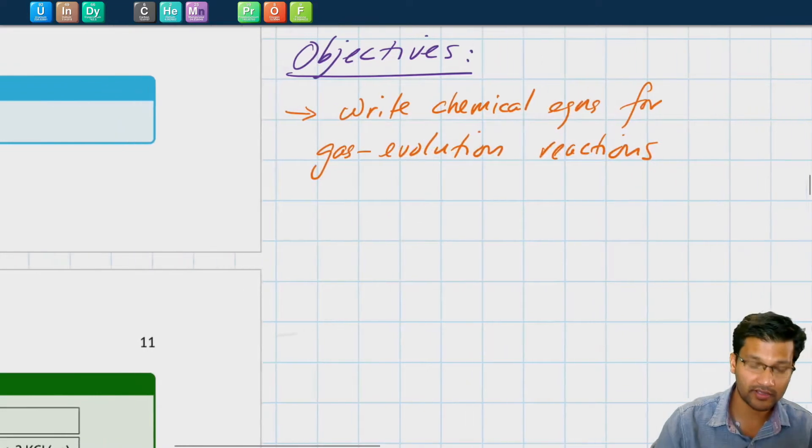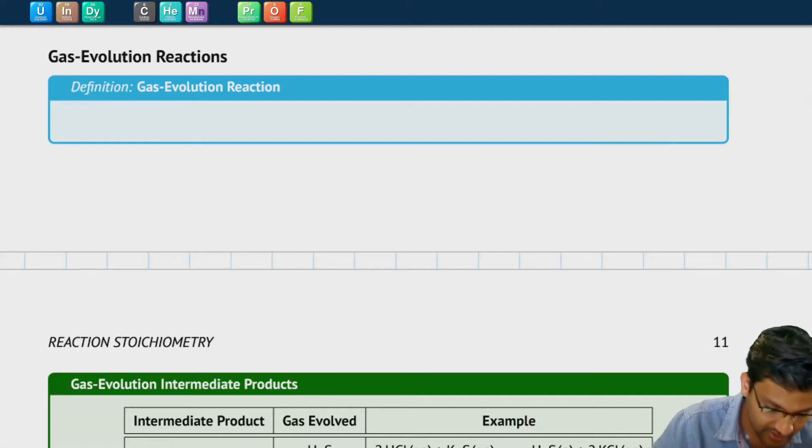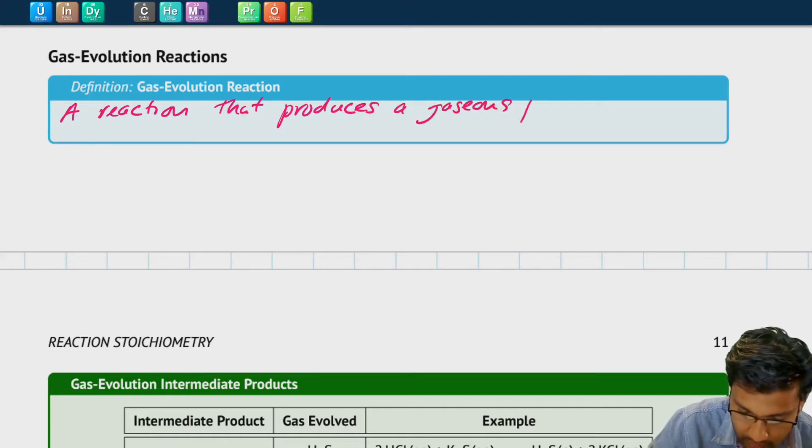As always you can follow along with our chapter 4 workbook. Now what is a gas evolution reaction? As I've just mentioned, a gas evolution reaction is simply a reaction that produces a gaseous product.